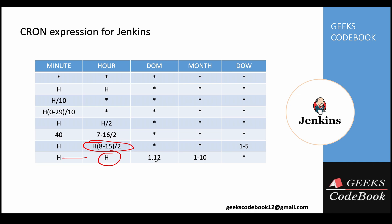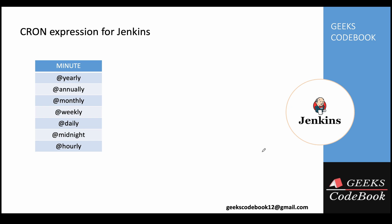In the day-of-month field, a comma means specific days — for example, the 1st and 12th. In the month field, a range like 1 hyphen 10 means January to October. A comma in day-of-week gives specific days — for example, 1 comma 5 means Monday and Friday. A hyphen like 1 hyphen 5 means Monday through Friday, which is a range. Remember, 0 is Sunday and 1 is Monday.